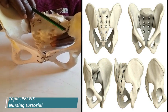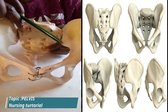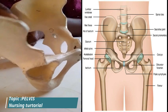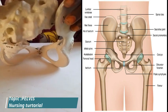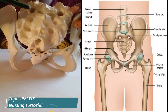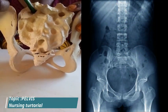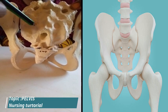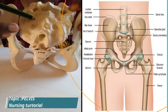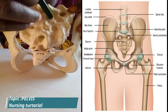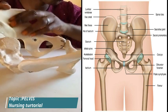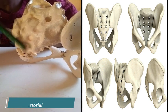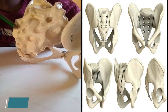Laterally, the sacrum extends into wings, which are also known as ala or wings of the sacrum. There is presence of four pairs of hollows or foramina on the sacrum, and these foramina allow the passage of nerves from the cauda equina to supply the pelvic organs. The posterior aspect is also roughened, allowing for the attachment of muscles.